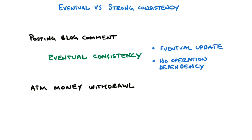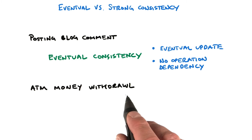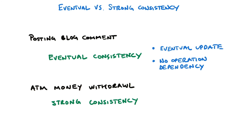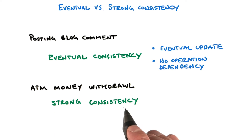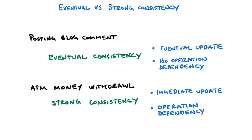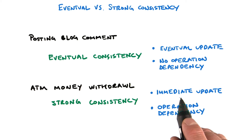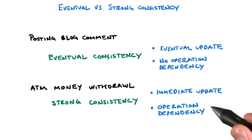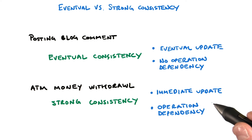What about this one — an ATM money withdrawal? Well, that's certainly a candidate for strong consistency, because even though you may not like it, the new balance should be reflected immediately. And there may be operation dependency — for example, there may be purchases coming in on that account that depend on an up-to-date balance.